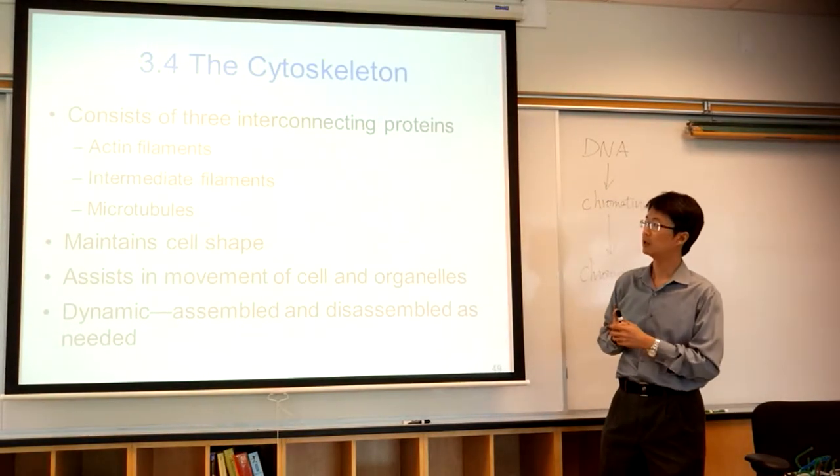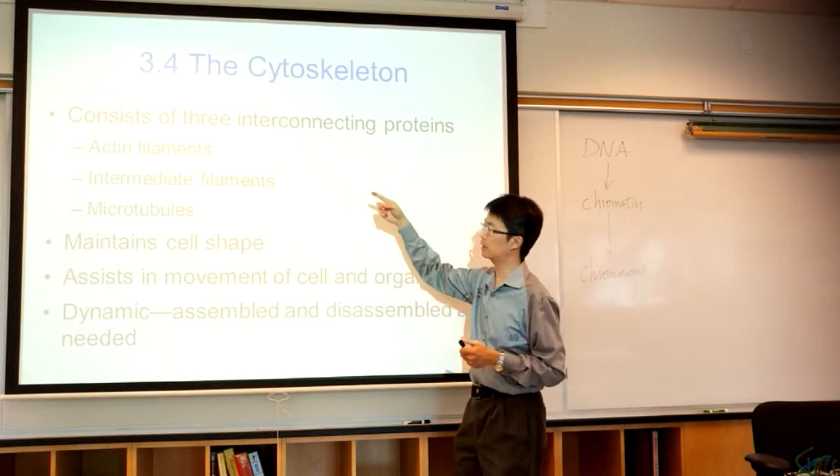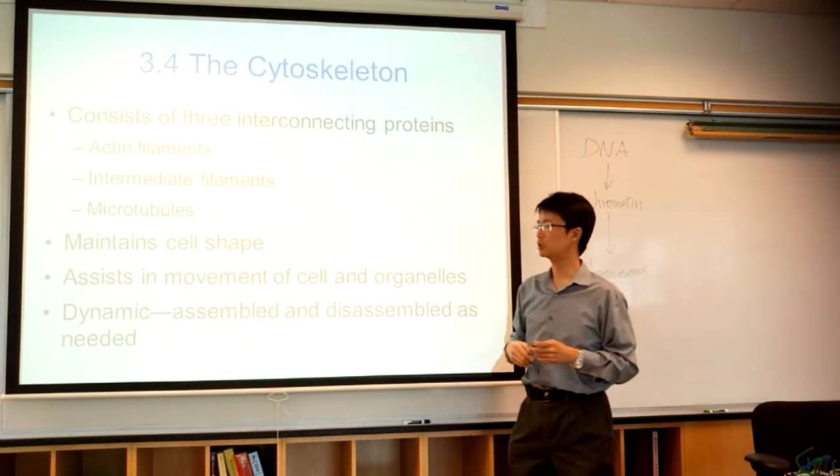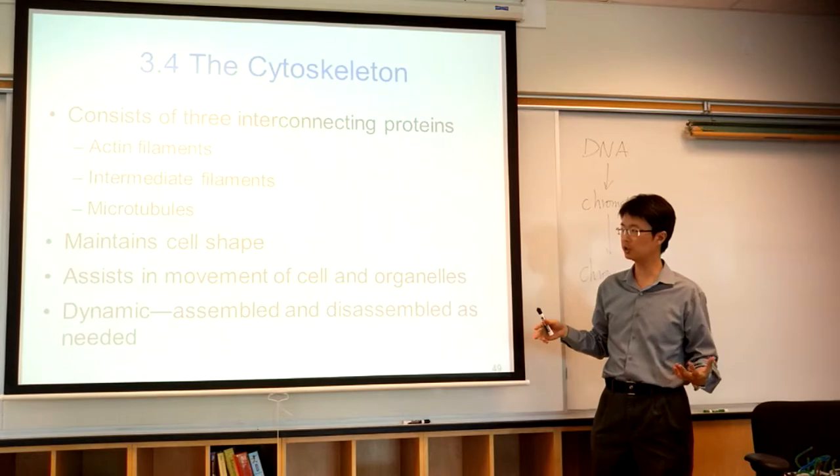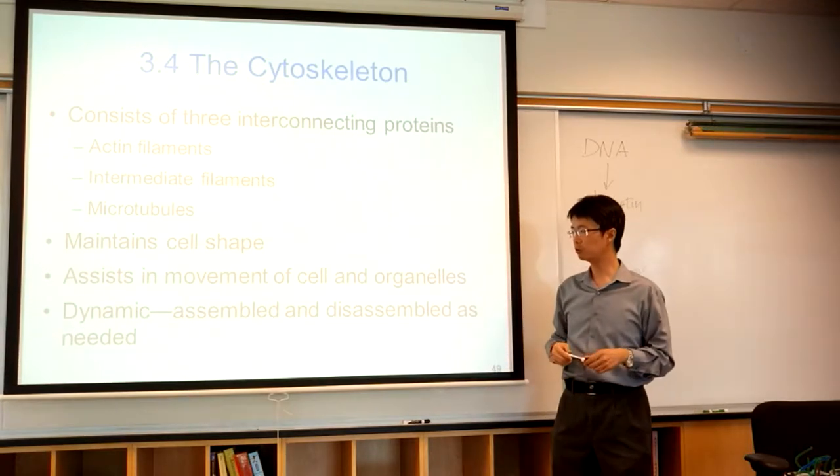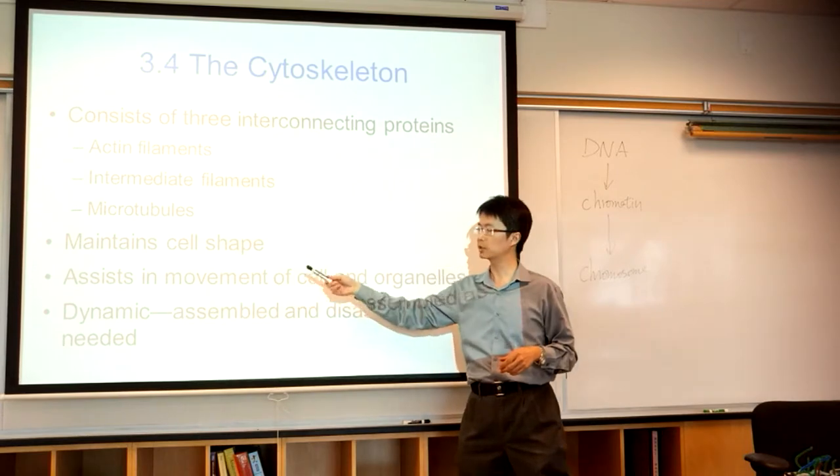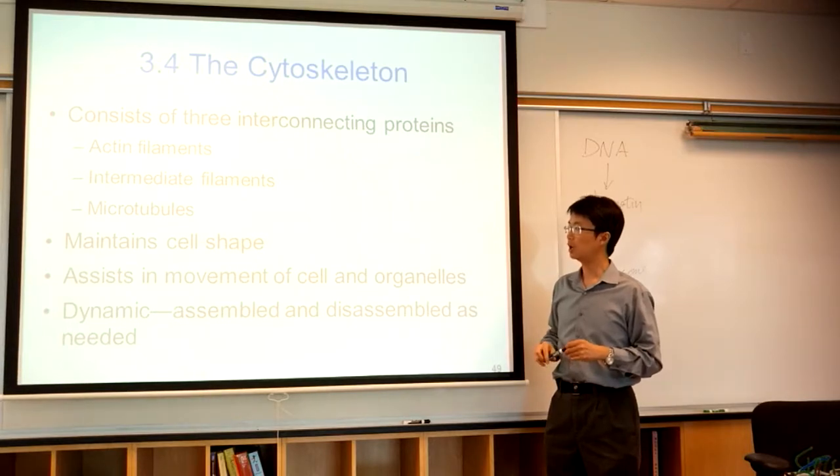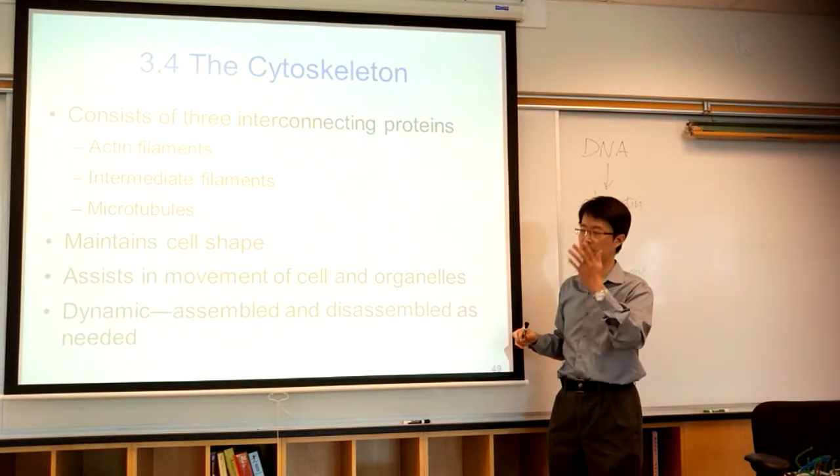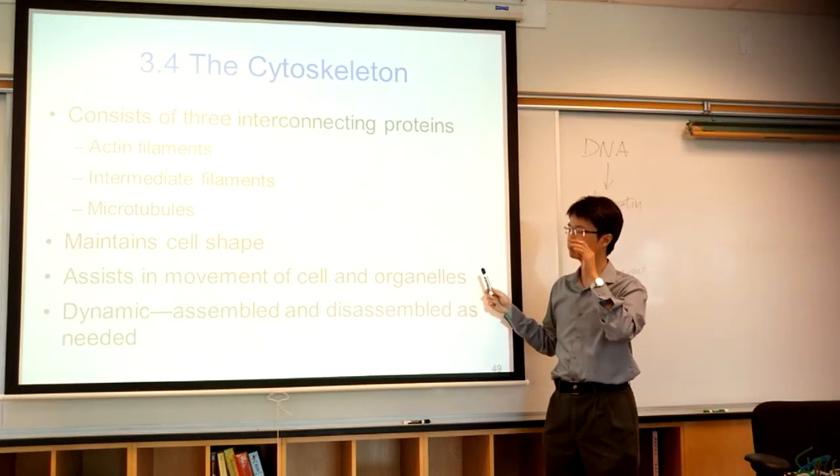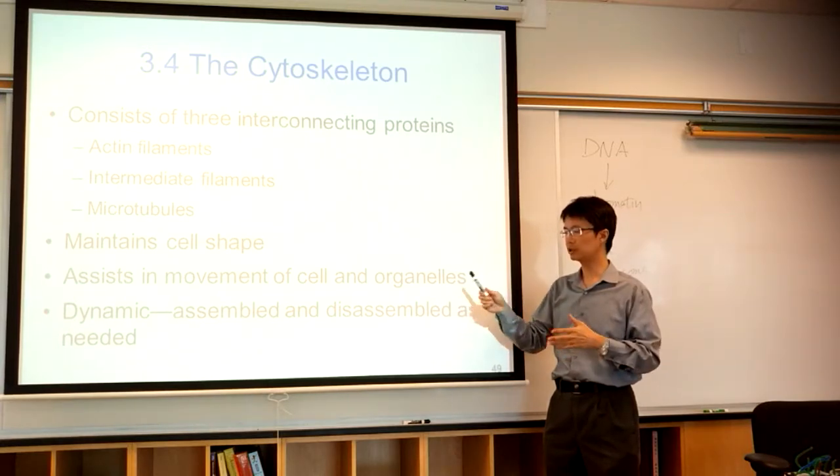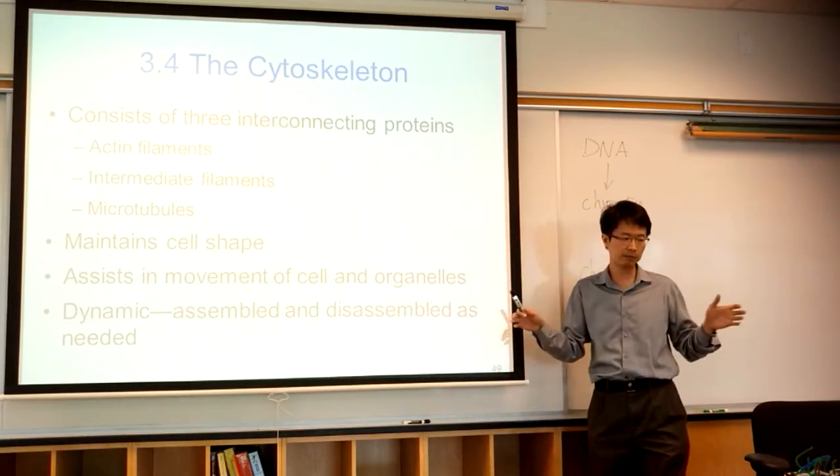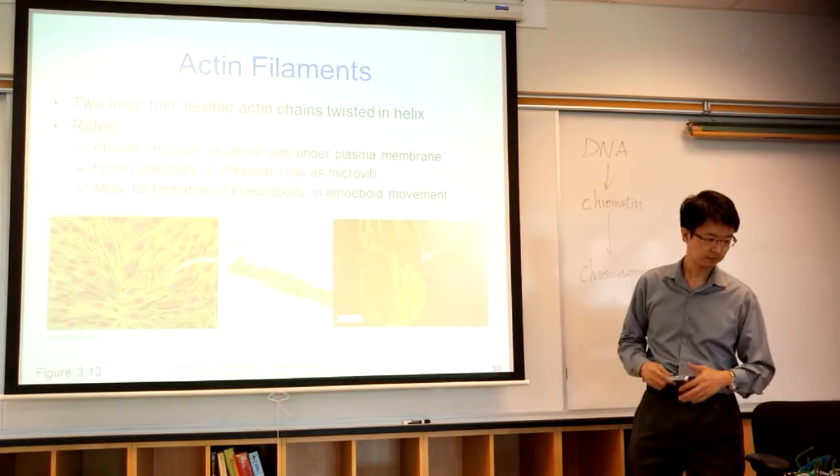Now cytoskeleton. Cytoskeleton, we have three types: actin, intermediate filament, and microtubule. So it is to maintain the cell shape, just like our bone structure. Bone is to maintain our body shape and movement. It also assists movement, just like our bone skeleton. It also moves the cell and organelles. They are dynamic, just like our bone. Our bone is dynamic. The cytoskeleton is so dynamic it actually lengthens, assembles, and then shortens, disassembles as needed. So the length can be increased or decreased.